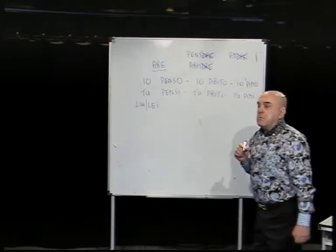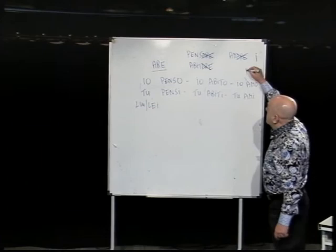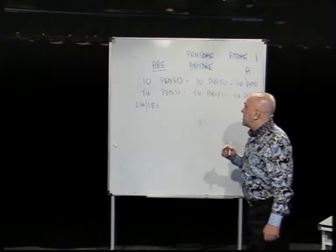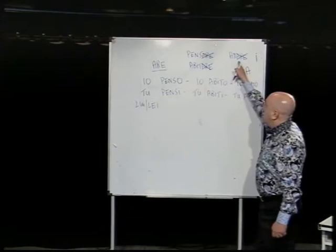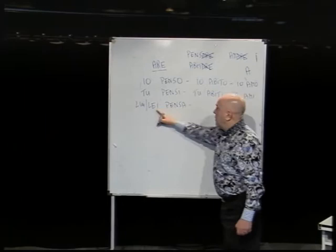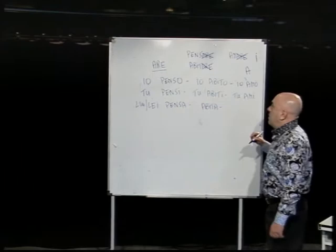When the subject is lui (he) or lei (she), same thing — remove the last three letters -ARE and add the letter A. So: lui pensa, lei pensa (he/she thinks); lui abita, lei abita (he/she lives); lui ama, lei ama (he/she likes or loves).